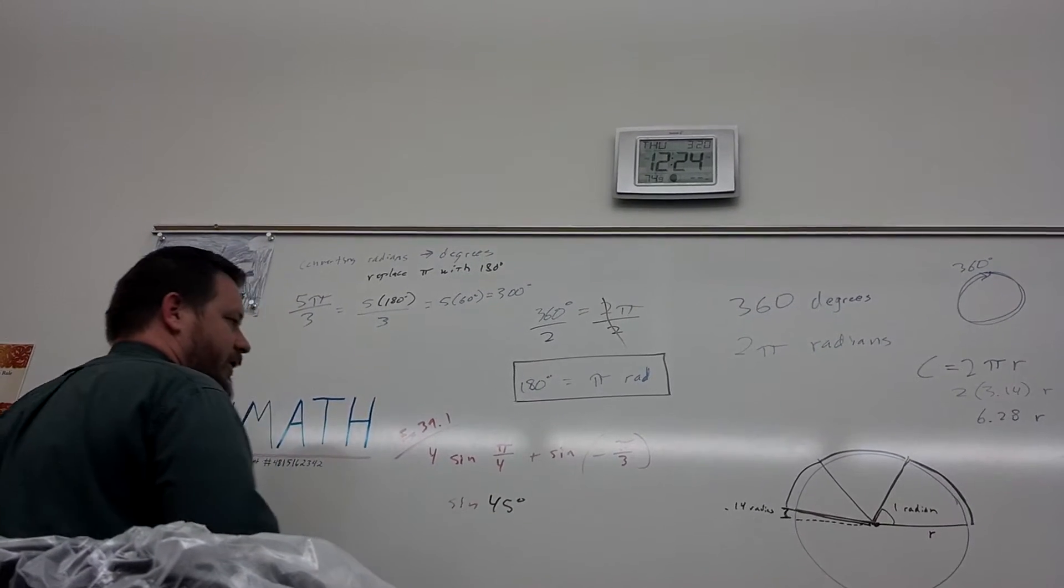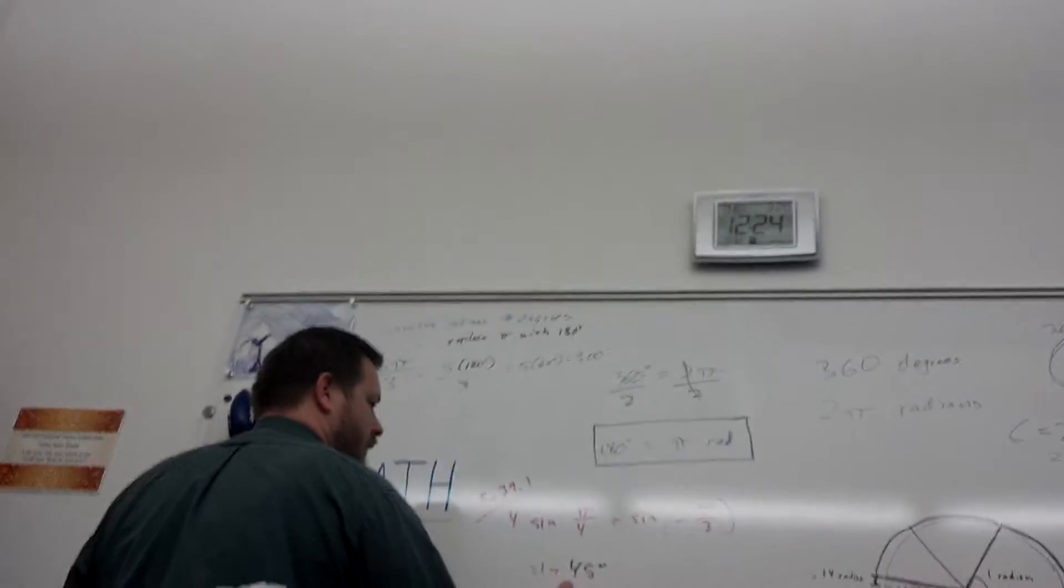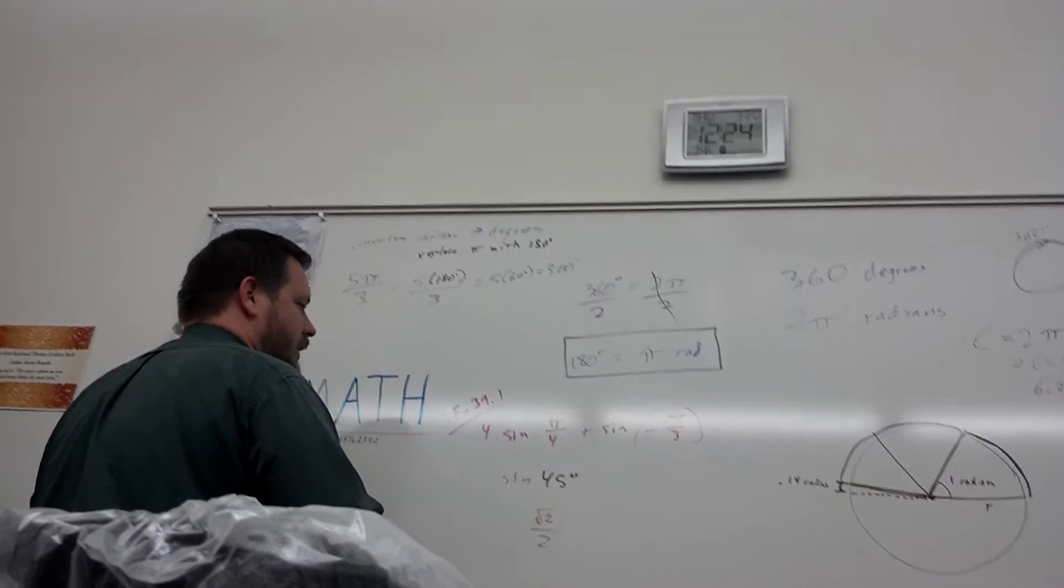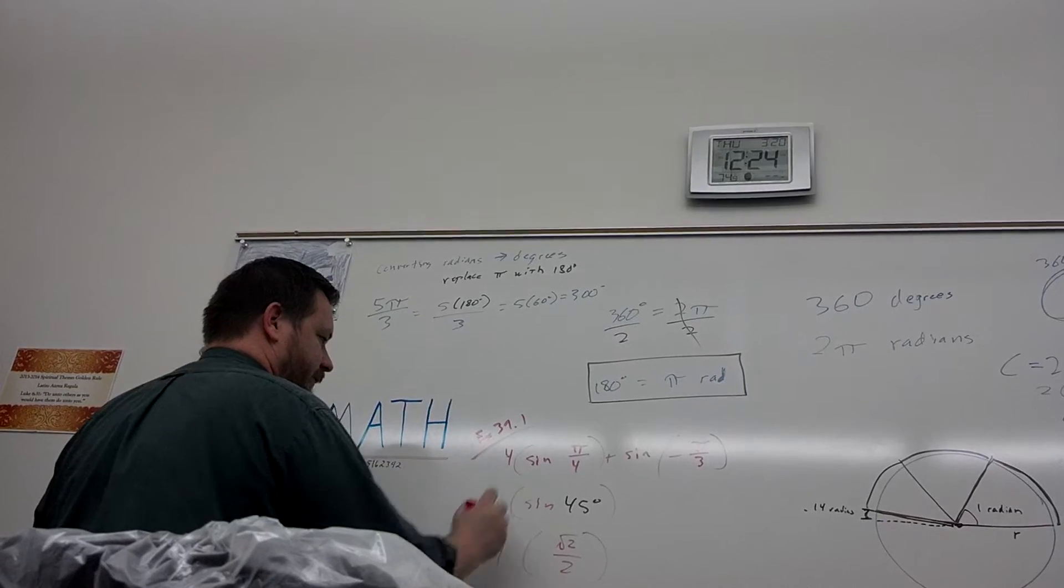So what's the sine of 45 degrees? No. 1 over 1 half. Root 2 over 2. Root 2 over 2. I wasn't looking. So that's this. Multiply that by 4. Because of the 4 out front here.